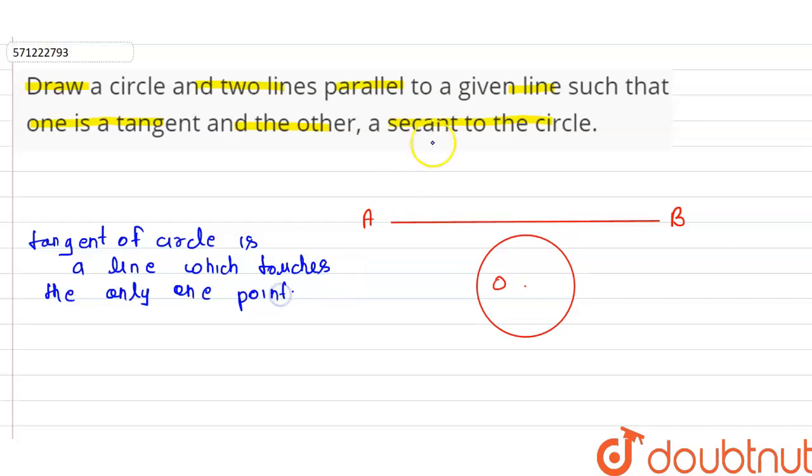If we draw the tangent of the circle, let's suppose this is line PQ. Line PQ touches the circle at only one point, let's suppose this point is R.